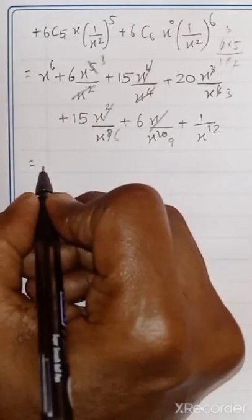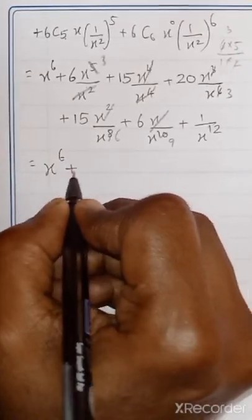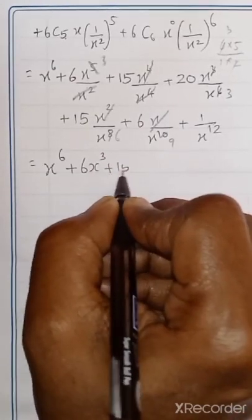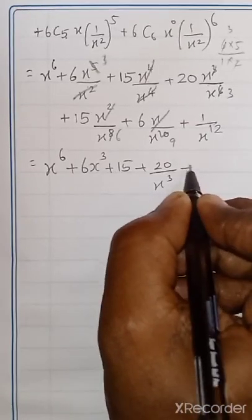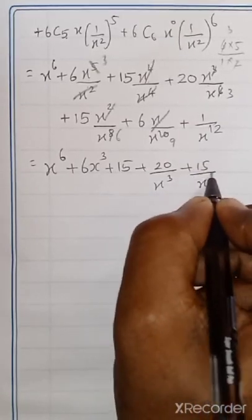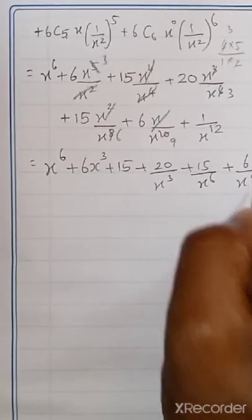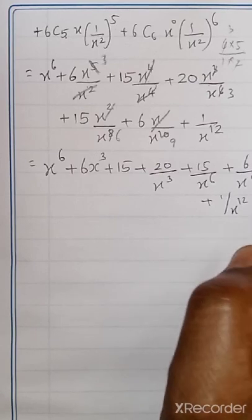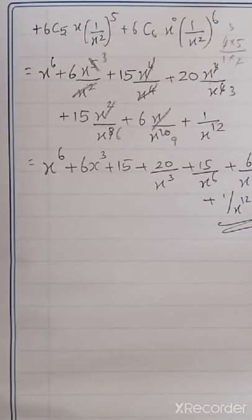After cancelling and simplifying, rewriting the final answer: X power 6 plus 6 X power 3 plus 15 plus 20 by X power 3 plus 15 by X power 6 plus 6 by X power 9 plus 1 by X power 12. This is your final answer.